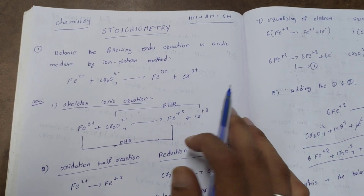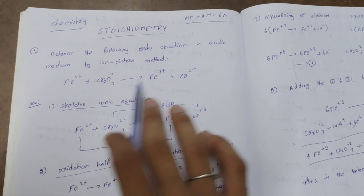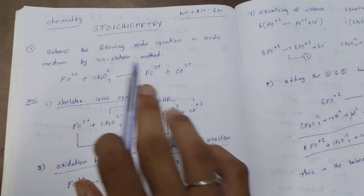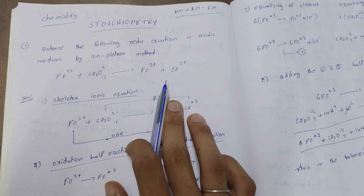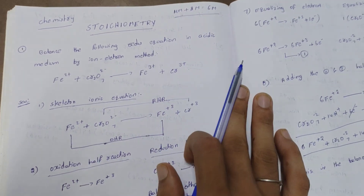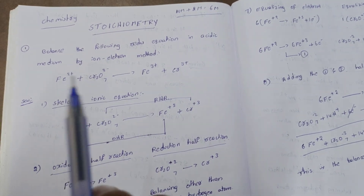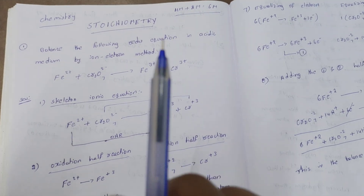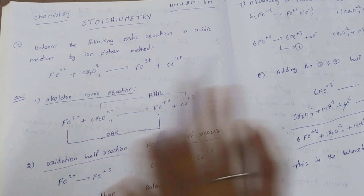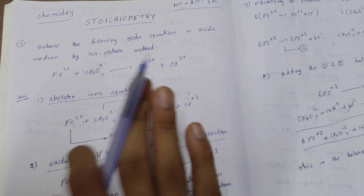My name is Sudhakar. You are watching Naro Study Pen. Friends, we will discuss Stoichiometry in junior inter-chemistry. In this lesson, we have 6 marks total: a 4-mark question and a 2-mark question. We have to cover the very important questions.